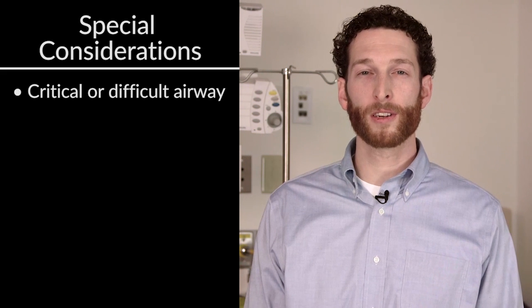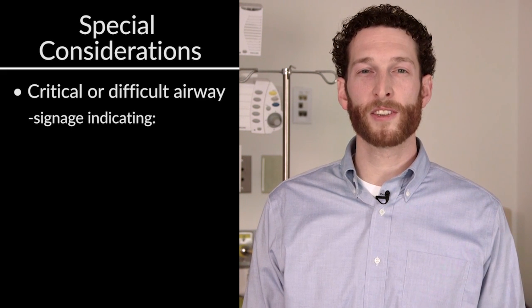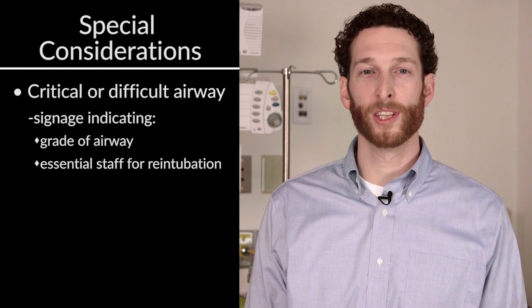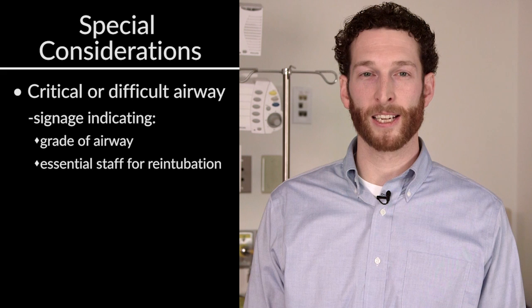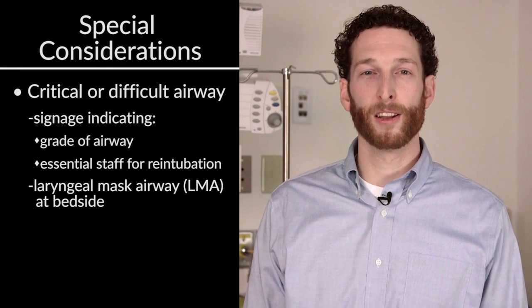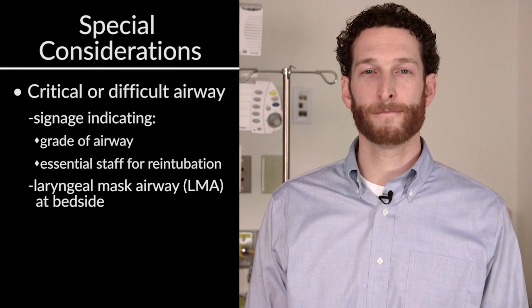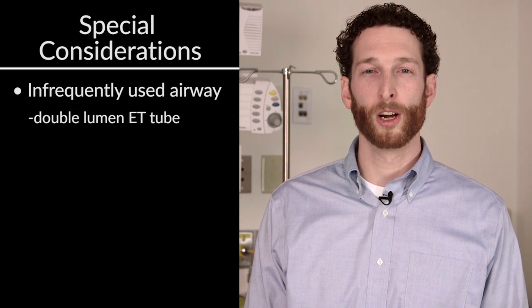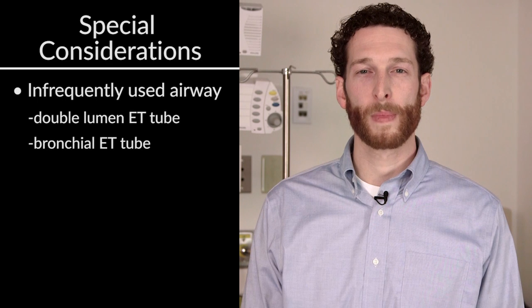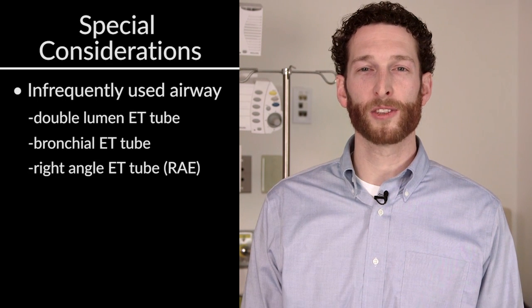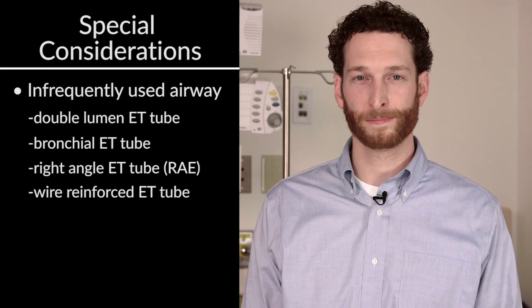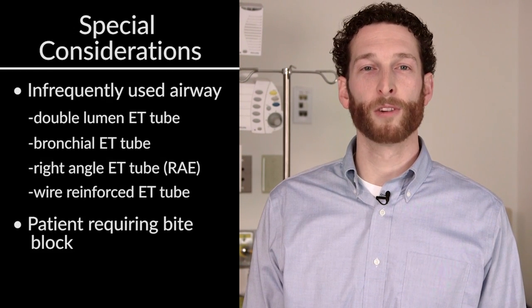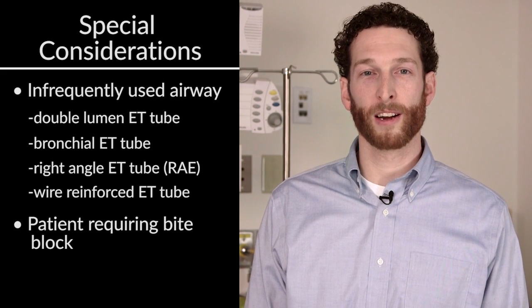Does the patient have a critical or difficult airway? Should there be signage at the bedside indicating the grade of airway and who must be present should the endotracheal tube come out and need to be placed back in? Is there a laryngeal mask airway at the bedside? Or is it an infrequently used airway, such as a double lumen endotracheal tube, a bronchial endotracheal tube, a special ray endotracheal tube, or a wire-reinforced endotracheal tube? Other special considerations might be if your patient is awake and requires a bite block to keep them from occluding their airway.